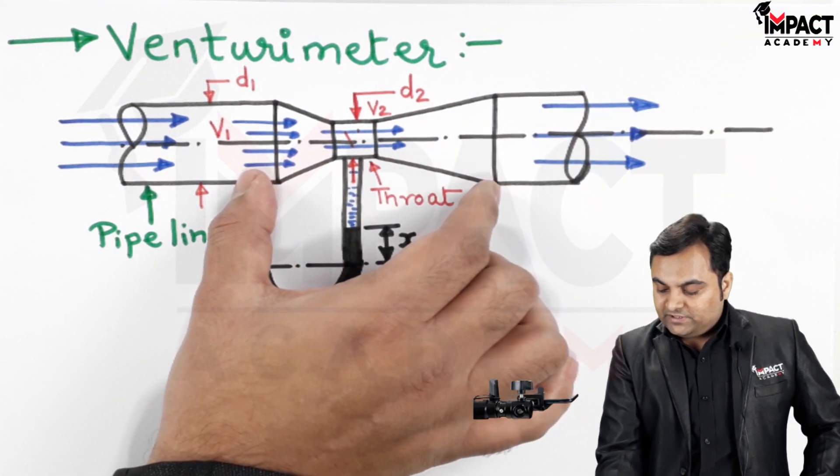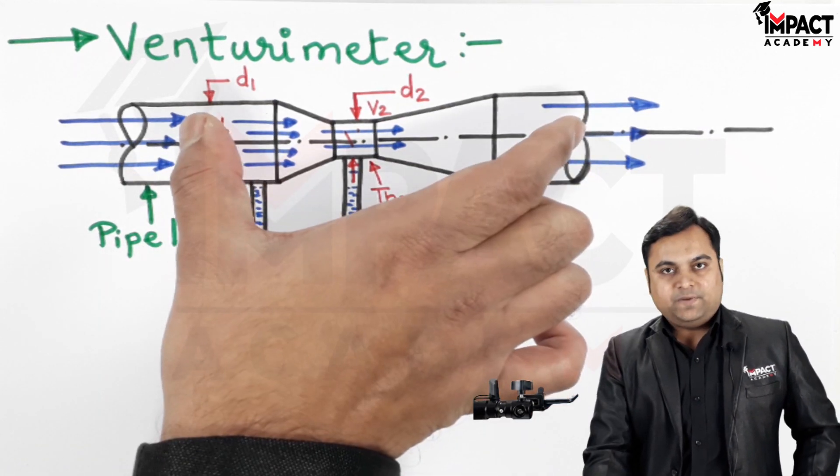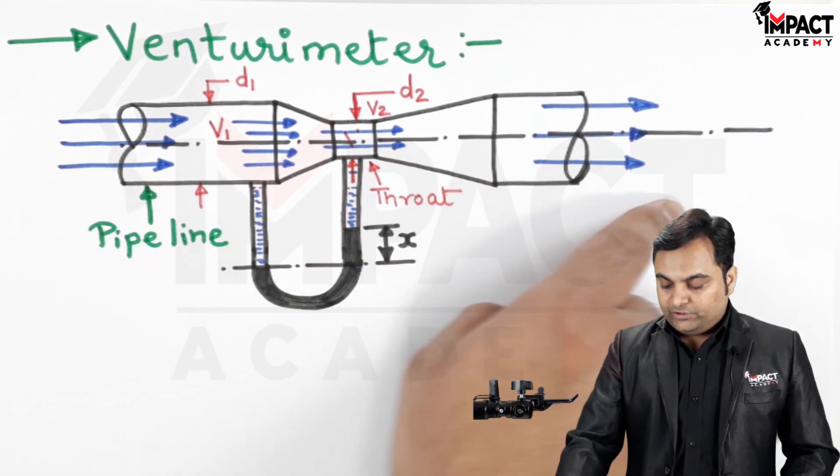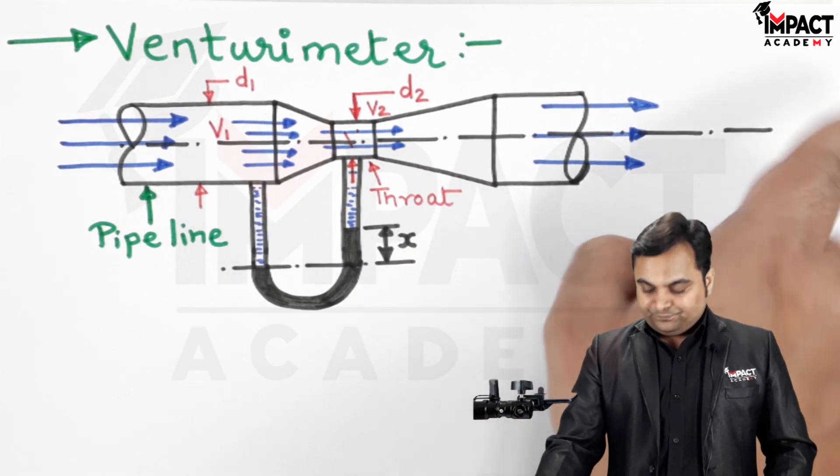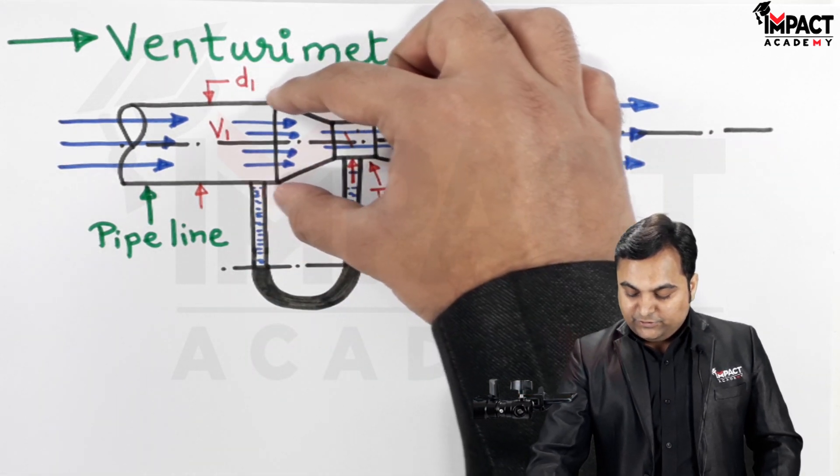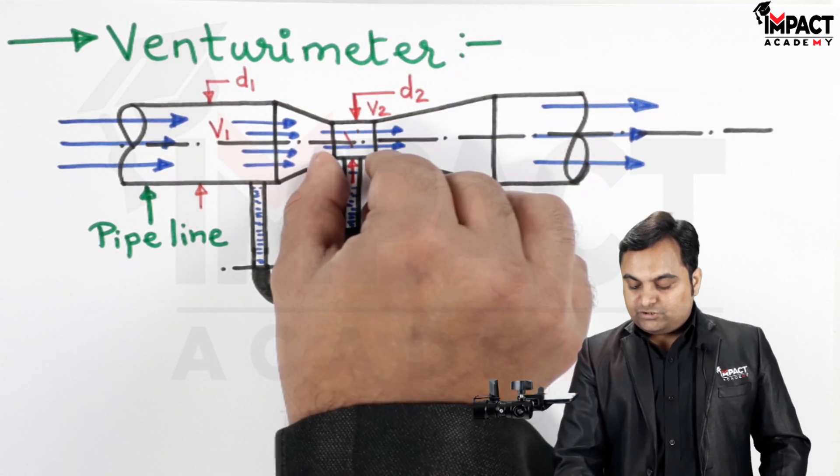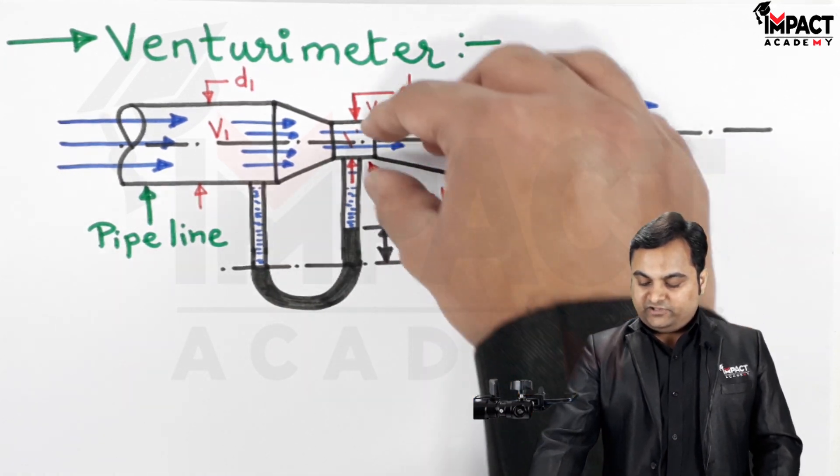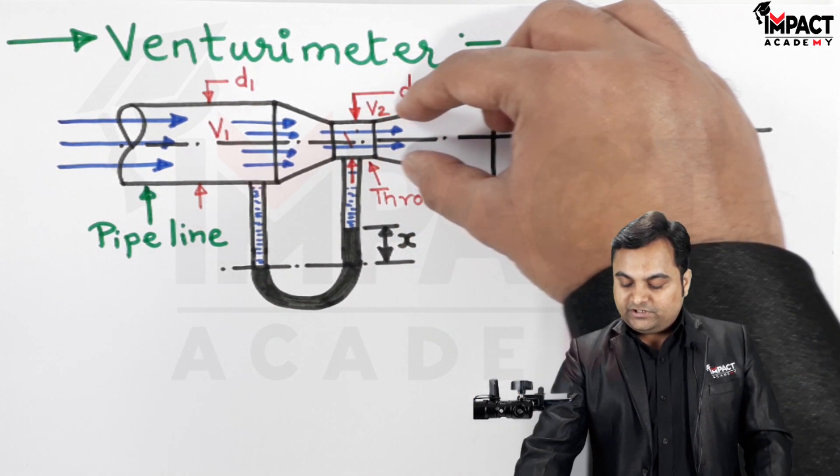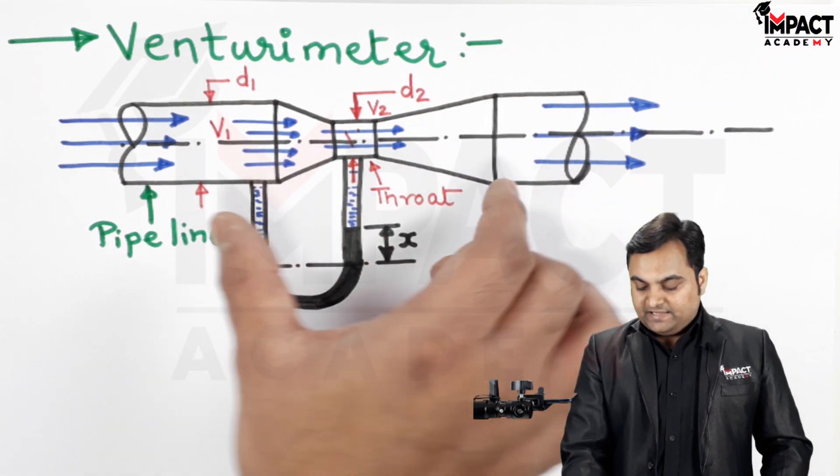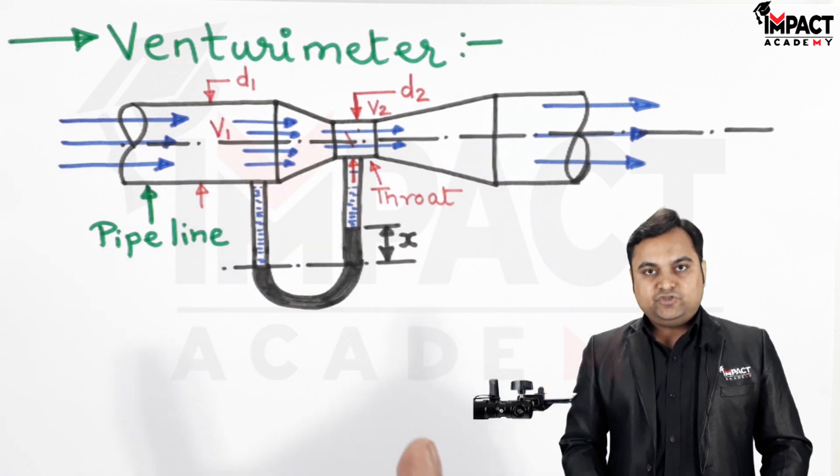Venturimeter is the device which is connected in between the pipeline when we want to measure the discharge or the flow rate of this flowing liquid. It has a convergent part where the diameter reduces first, then it remains constant for a small amount of length called as the throat section. After that the diameter goes on increasing again up to the pipe diameter, that is a diverging cone, and this complete device is called as the venturimeter.